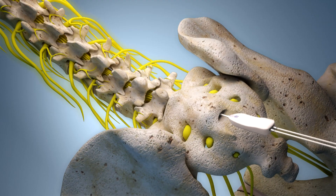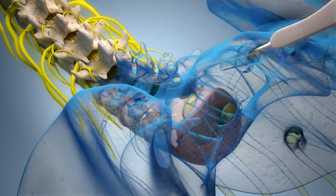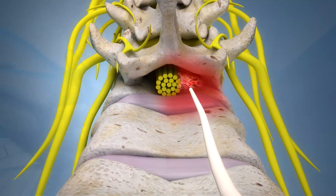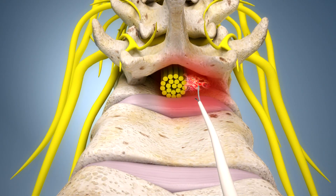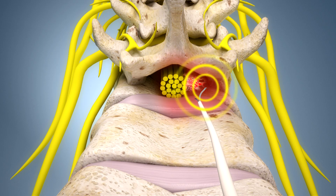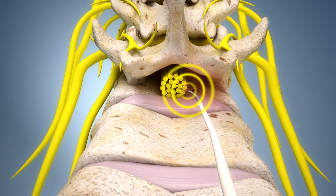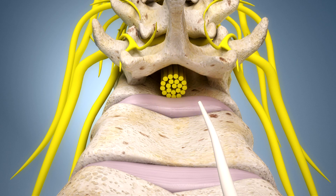We remove fibrous tissue through laser under visual control while reviewing the spinal canal status and treating any other pathological processes. We flush the spinal canal with a physiological solution in order to achieve visual clarity. Medications are administered through the instrument into the spinal canal. The duration of the procedure varies from 20 to 60 minutes.